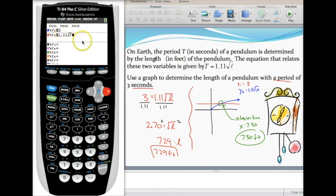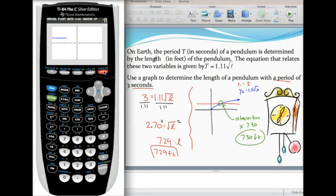I've entered in the two sides of the equation. As Y1 I've typed in 3, and as Y2 I entered the other side of my equation, 1.11 times the square root of ℓ, or X in this case. What I want to do is graph this and find the intersection of these two graphs. Let's take a look and see if we can see an intersection.